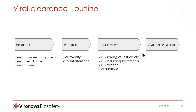The virus clearance study is divided into four parts: protocol, pre-study, main study, and report. First, a protocol is written describing the downscale virus-reducing steps, the starting material of each step — named as test article — and the viruses to be used. Next, the test article, that is the process material delivered by the customer, is evaluated for potential cytotoxicity to indicator cells, and other types of interference with virus detection. The results of this pre-study will guide the design of the main study. The actual virus reduction is measured in the main study, and finally, a virus safety report is written.